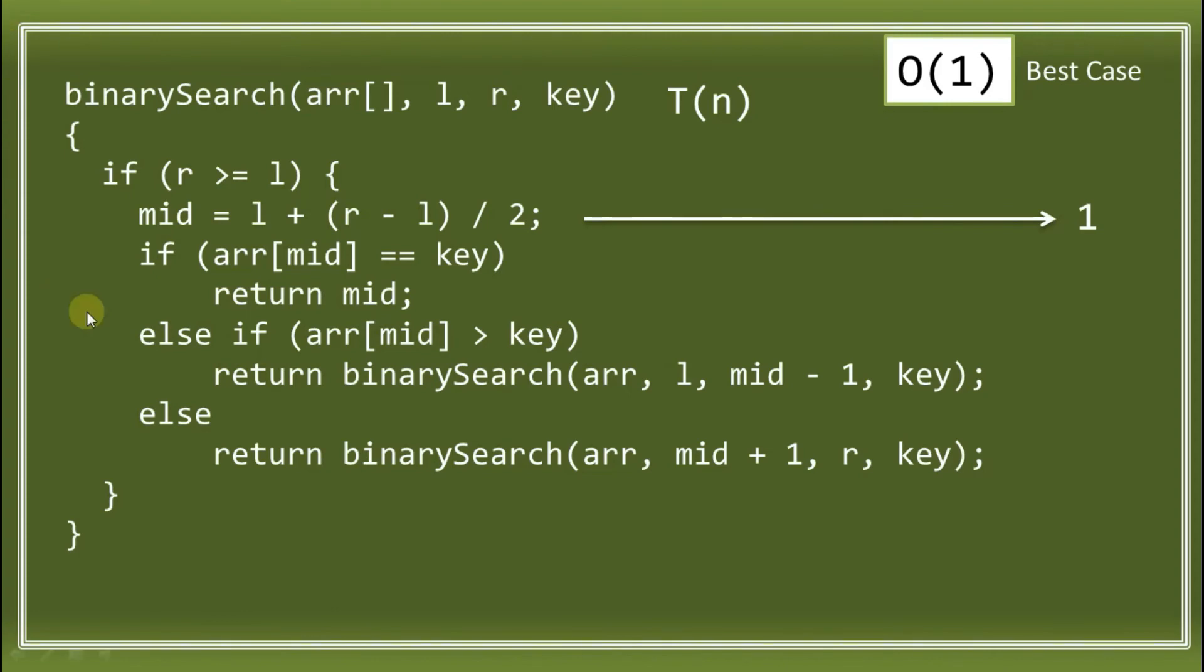Big O of 1 when in the middle index, on the first split of your array, the key you're searching for is already there. That is the best case. What if it's not the best case? That means it's either in the else if or in the else. We'll just pick one of them because they're the same call, except for the parameters or arguments being passed.